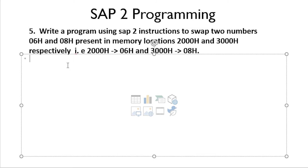We will make use of accumulators and registers — that is register B or register C — and SAP 2 instructions. Please check the SAP 2 instruction set tutorial before going through this, so you will be more clear. You can find the SAP 2 instruction set tutorial videos right here. Now let's proceed to today's problem: to swap two numbers using SAP 2 instructions.